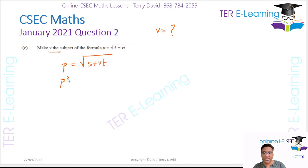When I square both sides, I'm going to get p² is equal to... Now, when you square a square root, the square root disappears. So you're going to get 5 plus vt. Now, you want to make v the subject of the formula. So I'm going to write 5 plus vt is equal to p². So therefore, vt is equal to p² minus 5.